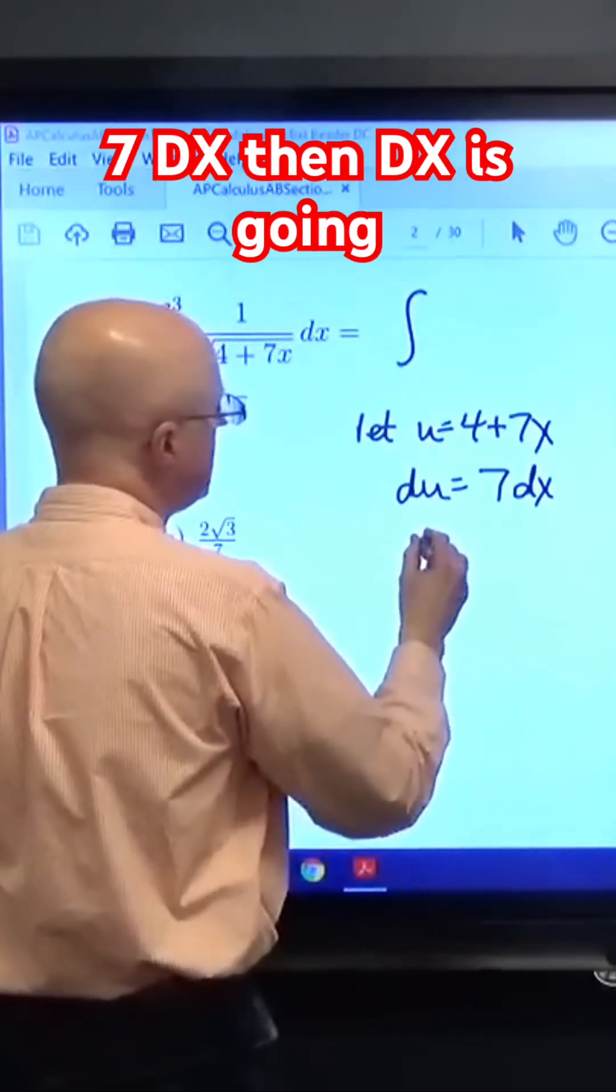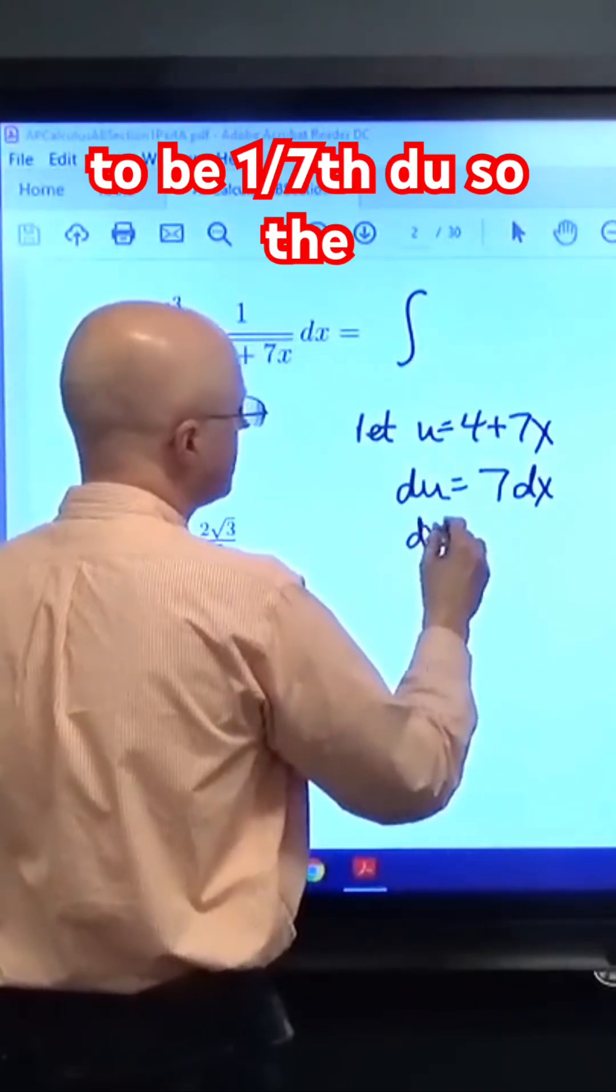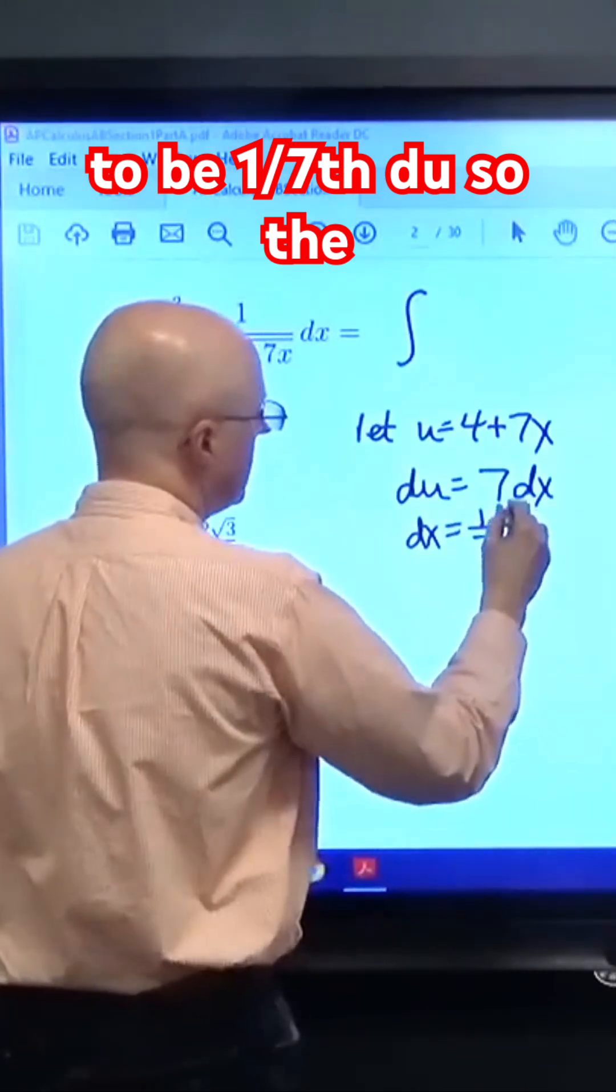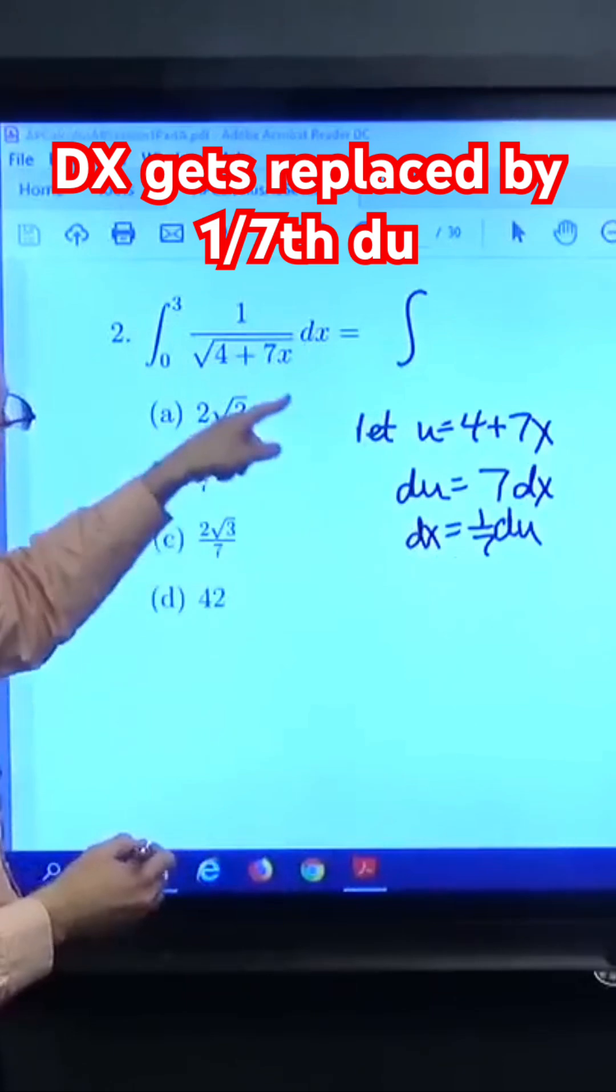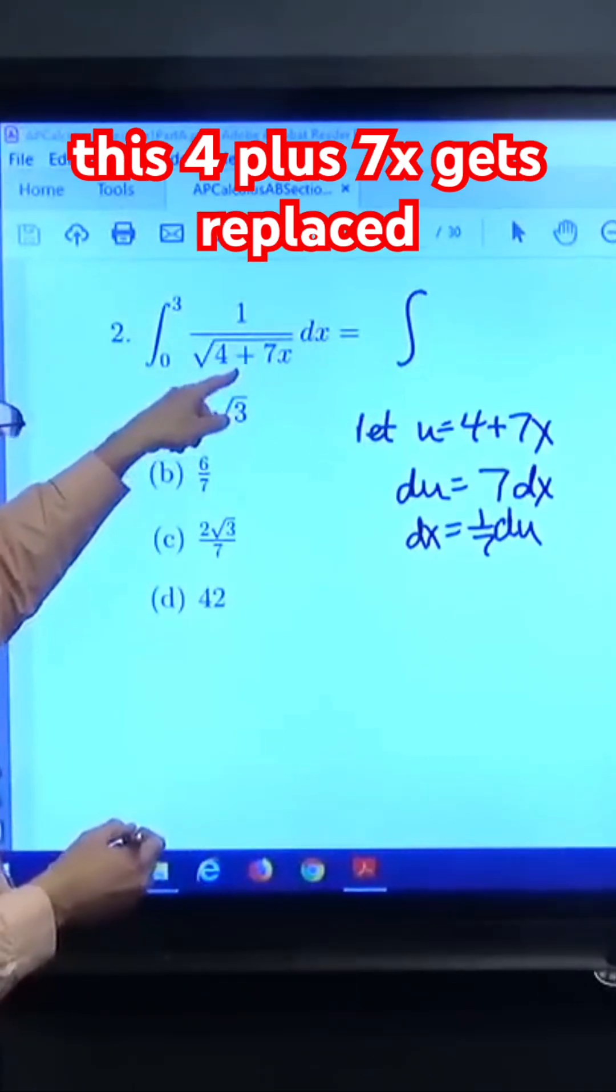If du is 7 dx, then dx is going to be 1/7th du. So the dx gets replaced by 1/7th du. This 4 plus 7x gets replaced by u itself.